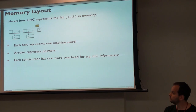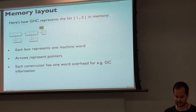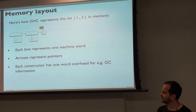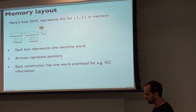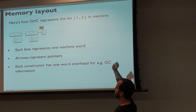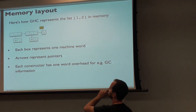So here's an example. This is a list — list one, two. So one and two are integers in this case. They could be overloaded literals, so it could be something else, but here they're integers.